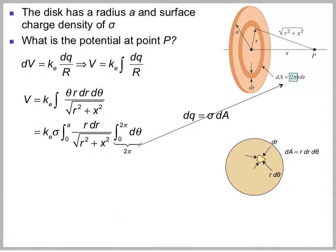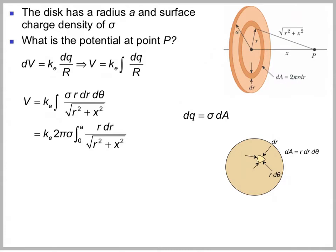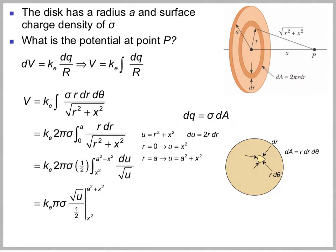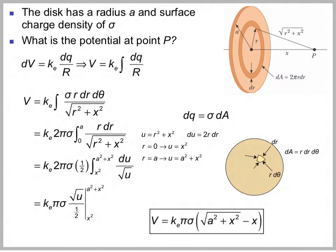We can recognize that dq is just the ring element, and either method works. We get 2 pi sigma k times the integral of r dr over the square root of r squared plus x squared. Using a u-substitution with u equal to r squared plus x squared, du equals 2r dr. When r equals 0, u equals x squared; when r equals a, u equals a squared plus x squared. The integral of du over the square root of u gives the square root of u divided by one-half, and plugging in the values, the potential at point P is k pi sigma times the square root of a squared plus x squared, minus x.